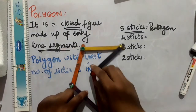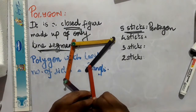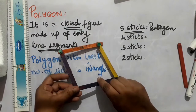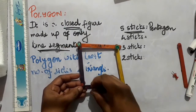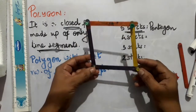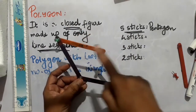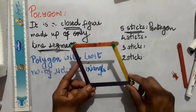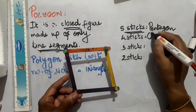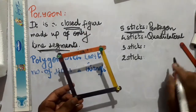Now I will try to form a closed figure using 4 sticks. I am going to remove one of the sticks. Now I am left with 4 sticks, and here you can see that I am able to form a closed figure. You can make it the way you want — it should be a closed figure. So a polygon with 4 sides is also possible, and it is known as a quadrilateral.